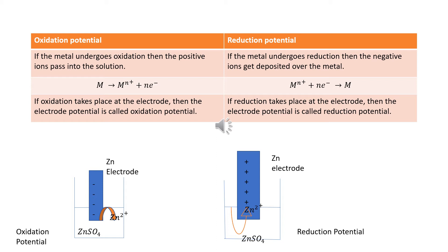What is reduction potential? If the metal undergoes reduction, the positive ions get deposited over the metal — that is, the metal will gain electrons and convert back into the metal. So it is known as reduction potential. If reduction takes place at the electrode, the electrode potential is called reduction potential. In the case of oxidation potential, the tendency of a metal atom to go into the solution as positive ions is known as solution pressure (Ps). In the case of reduction potential, the tendency of positive ions in the solution to gain electrons from the metal surface and get deposited on the metal is known as osmotic pressure of ions (Po).